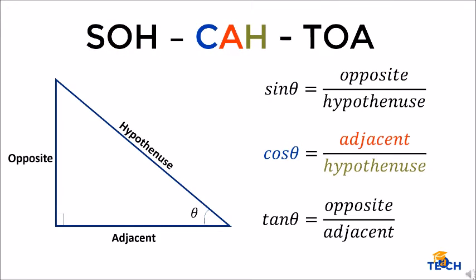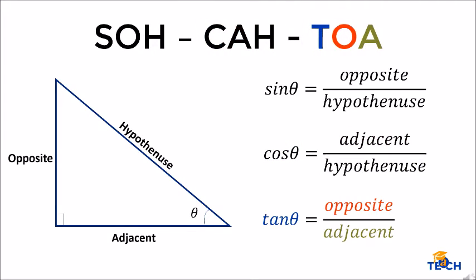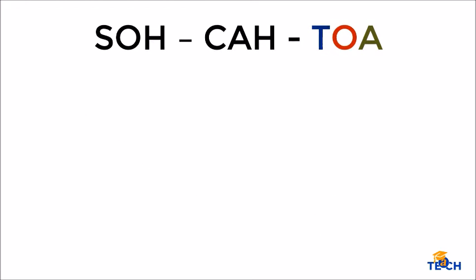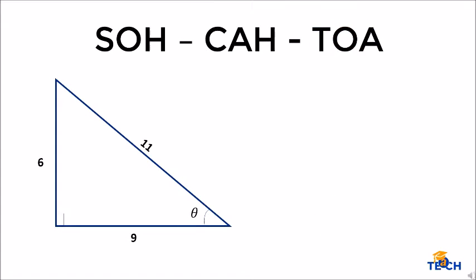For CAH: cosine theta equals adjacent over hypotenuse. And lastly, for TOA: tangent theta equals opposite over adjacent. This is SOH-CAH-TOA.